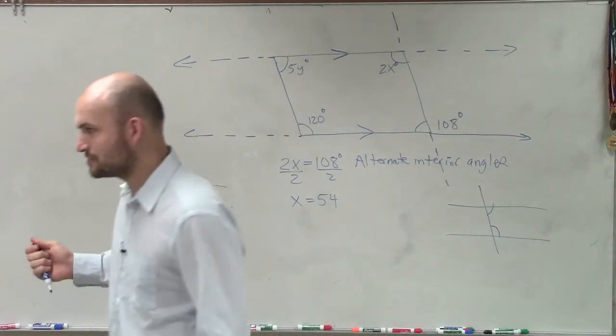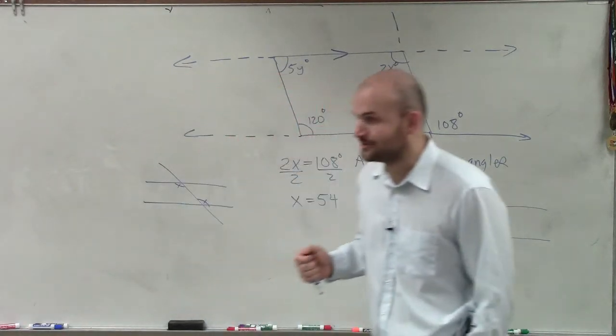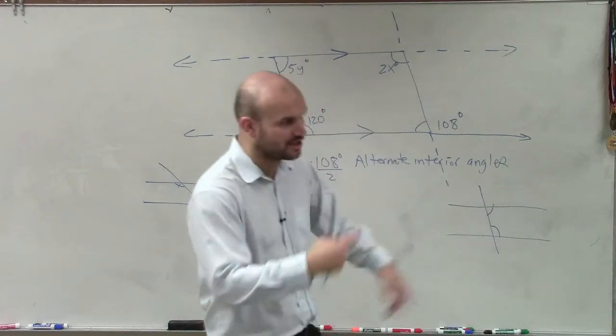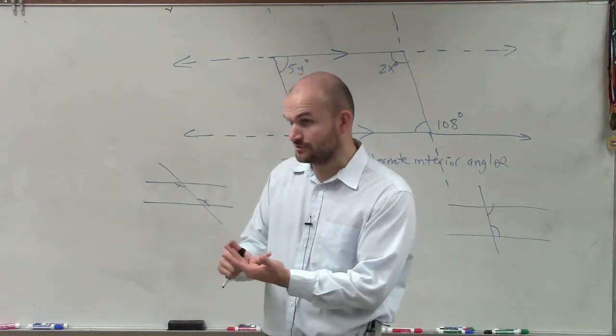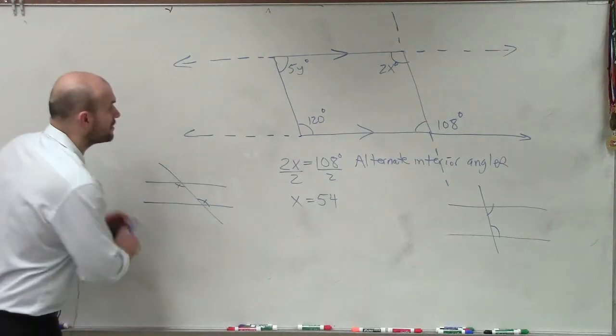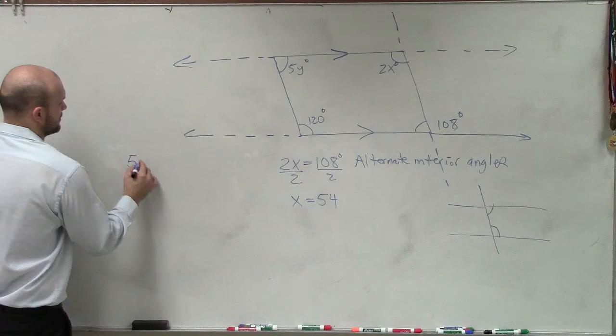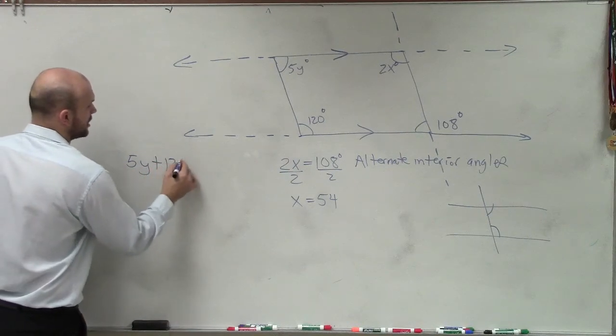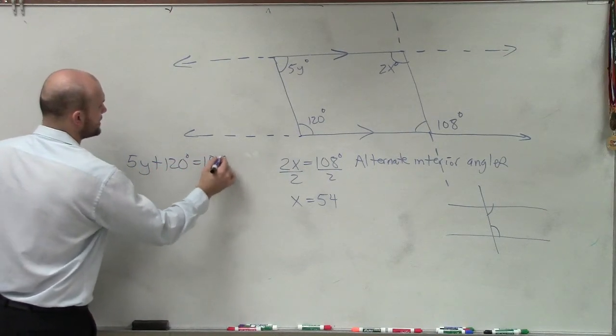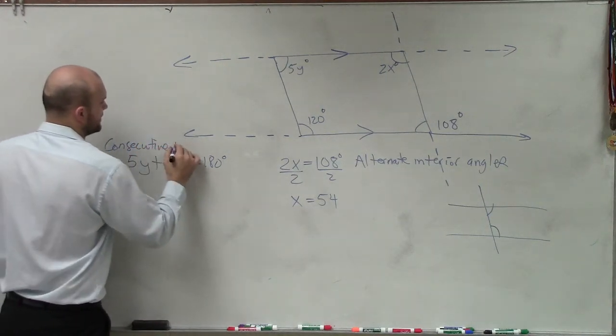And don't say they're equal to each other. Their sum is equal to 180, right? Remember, alternate interior, alternate exterior, and corresponding are equal to each other. Consecutive interior add up to 180. So therefore, for me to find the value of y, I can say that 5y plus 120 degrees equals 180 degrees, because those are consecutive interior.